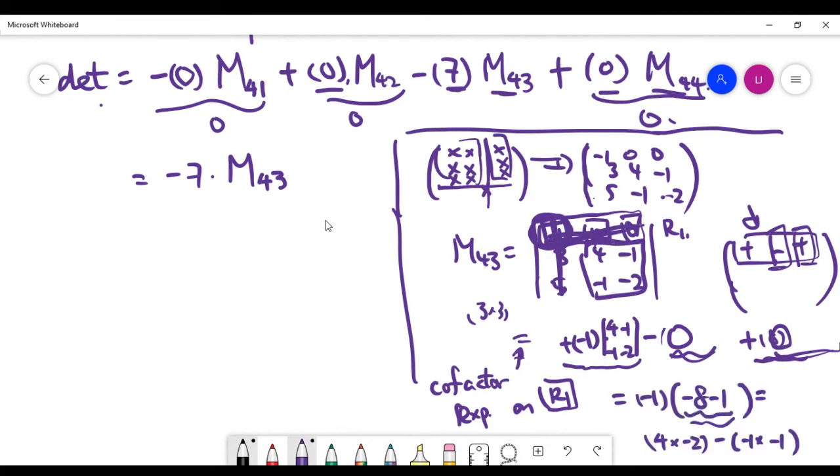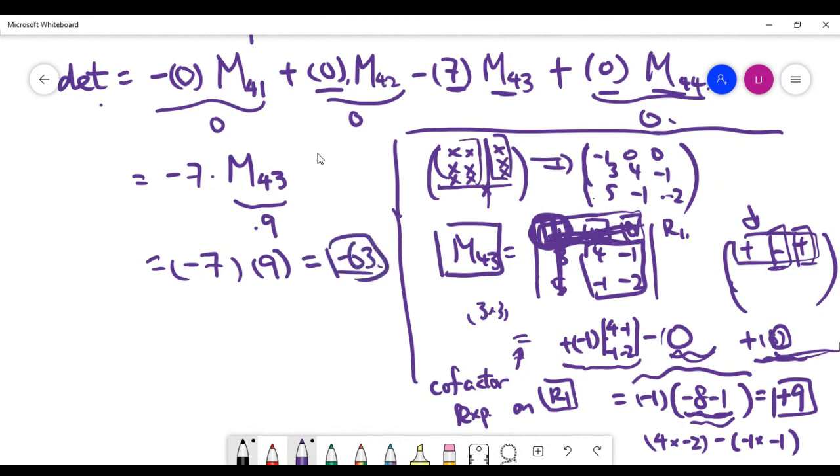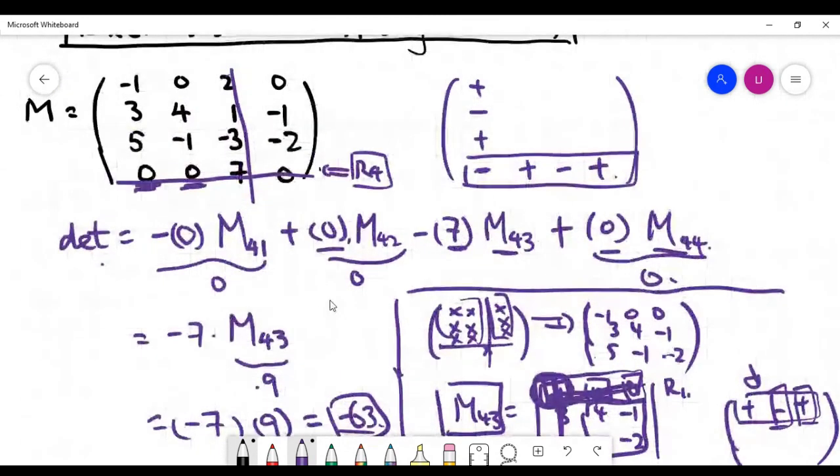So the determinant of this matrix is going to be minus 9. Then it means the whole determinant is going to be minus 1 times minus 9, which is 9. And this 9 represents the minor at this position, so we have to replace the 9 here. It means now we understand that the determinant is going to be minus 63. And this minus 63 is the determinant value for our original problem, which is a 4x4 matrix.